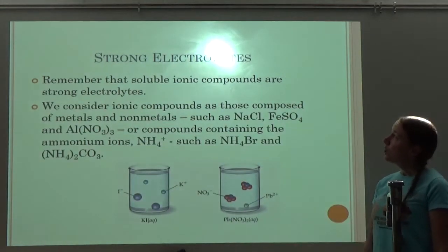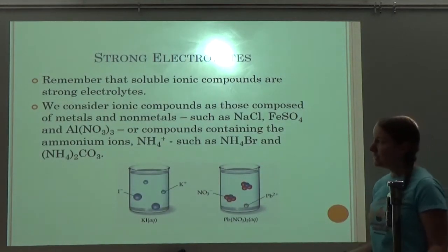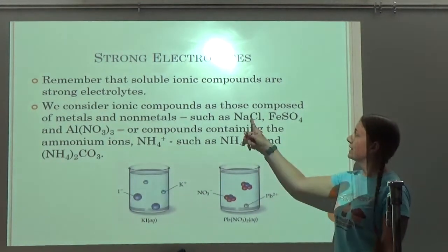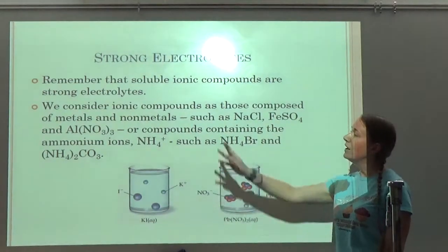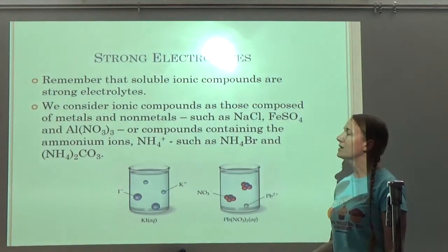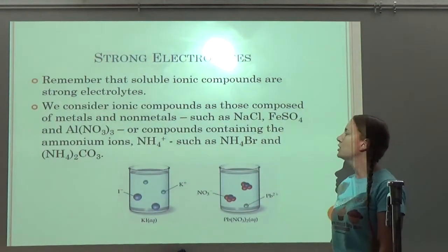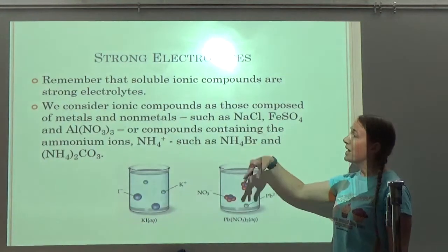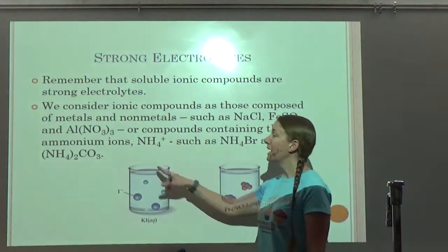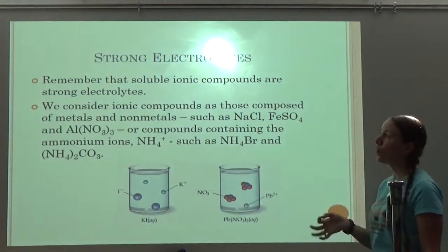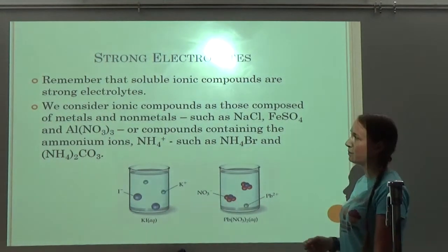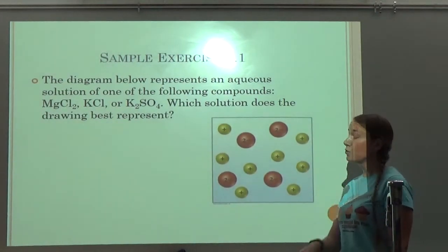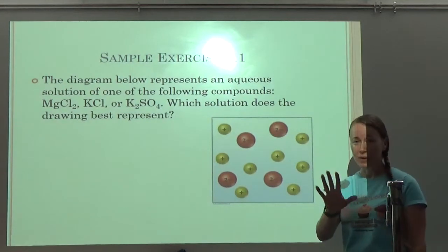Remember that soluble ionic compounds are strong electrolytes. We consider ionic compounds as those composed of metals and non-metals, such as NaCl, FeSO₄, and Al(NO₃)₃, or compounds containing ammonium ions, such as NH₄Br and (NH₄)₂CO₃. If it's a metal and a non-metal, or it has an ammonium ion in it, those are our strong electrolytes. Also, don't forget that strong acids and bases will also fully break up — we'll talk about those again in a minute.